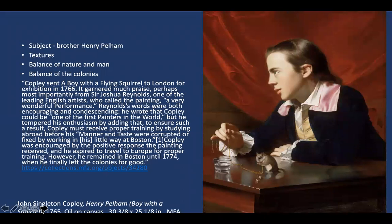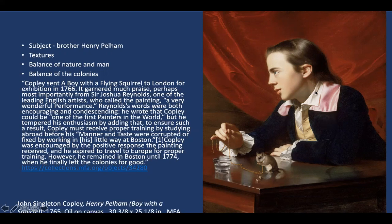Looking at his earlier works, the painting called Henry Pelham — sometimes known as Boy with a Squirrel — depicts his half-brother. Painted in 1765, he sent it to England as a sampler to demonstrate what he could do and potentially obtain commissions there. It is a masterwork of texture: look at Henry Pelham's hair, which appears almost touchable, along with the gold chain, the squirrel's bushy tail, the wood of the table, the glass, the water in the glass, the fabric drapery, Henry Pelham's outfit, and his skin tones.